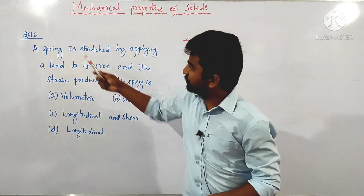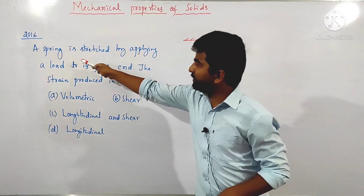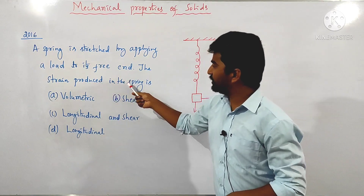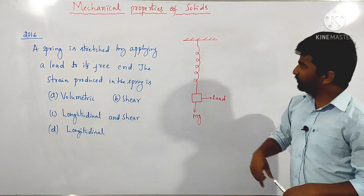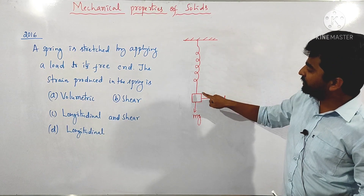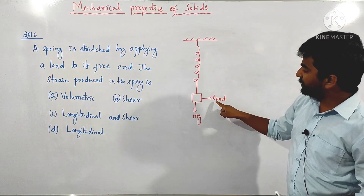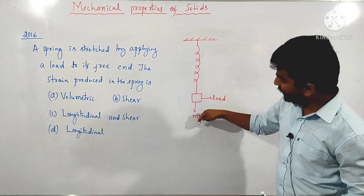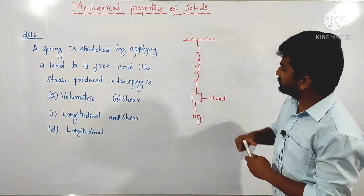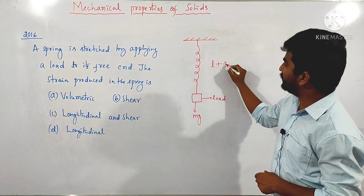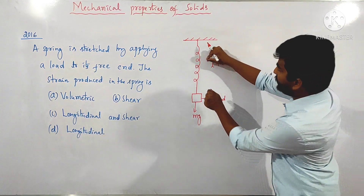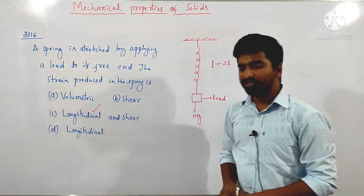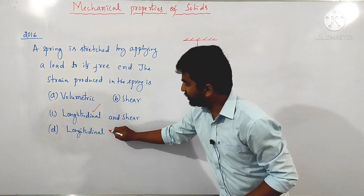We move on to the next question, asked in 2016. A spring is stretched by applying a load to its free end. The strain produced in the spring is — four options given. This is the spring attached to a rigid support with a load at the free end. The load exerts a force mg downward, causing the spring to stretch — there will be an increase in length delta L. That corresponds to longitudinal strain.